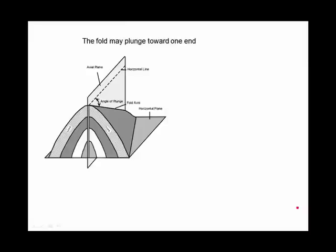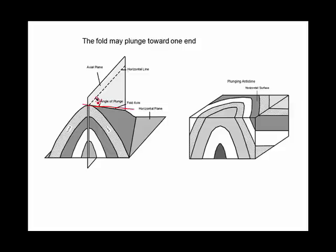Here we have a symmetrical anticline, but the axis of the fold itself is plunging down away from us. We can even measure the angle of that plunge. If you were to see it in a block diagram, you can see from the side that it's going downward.